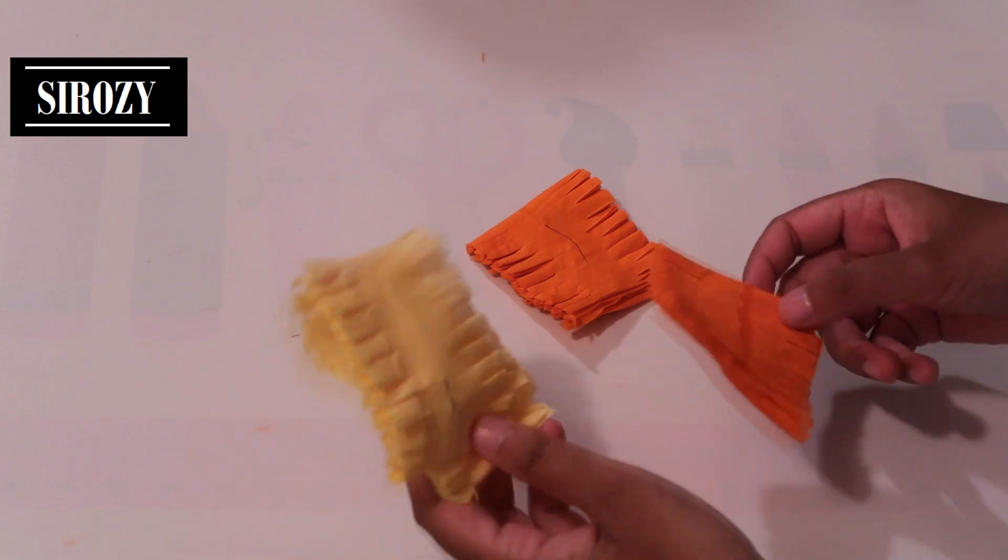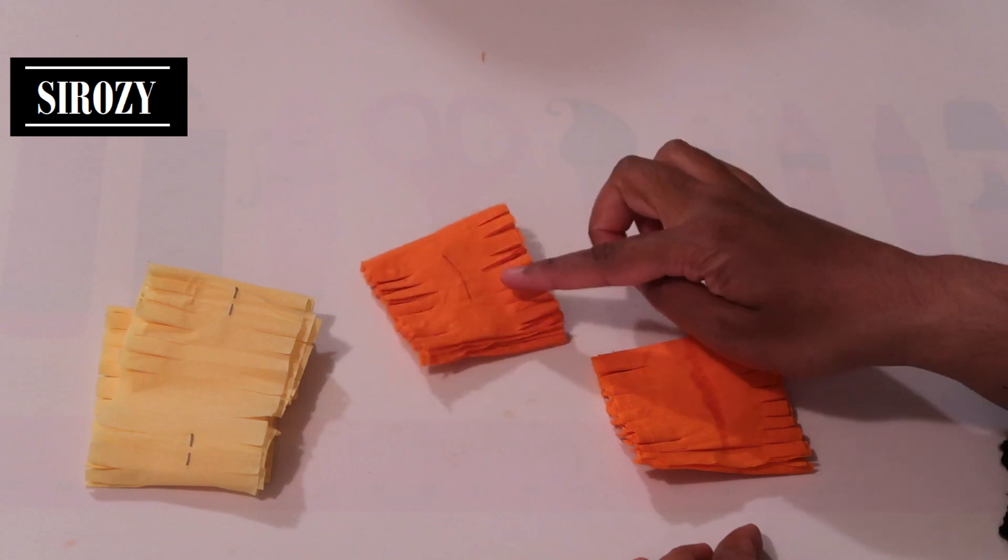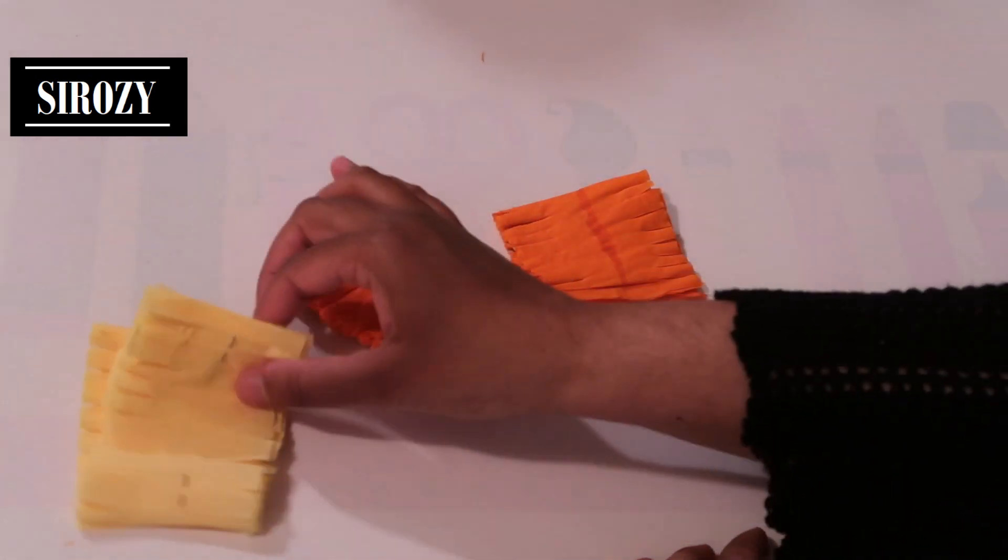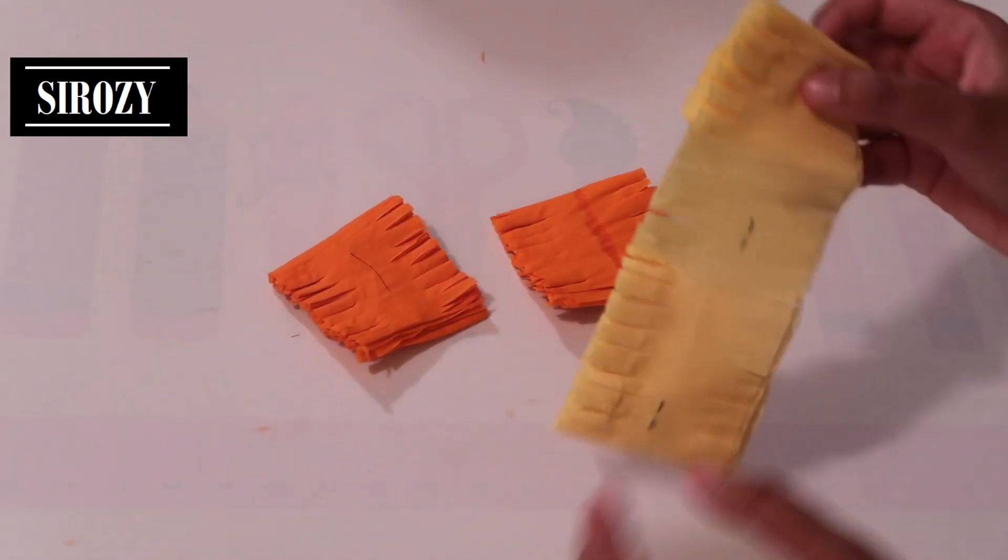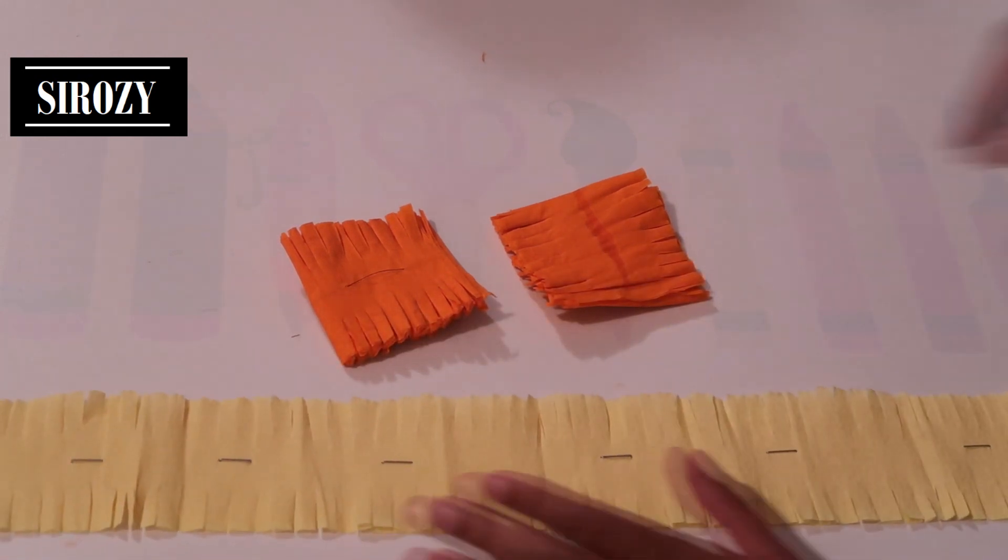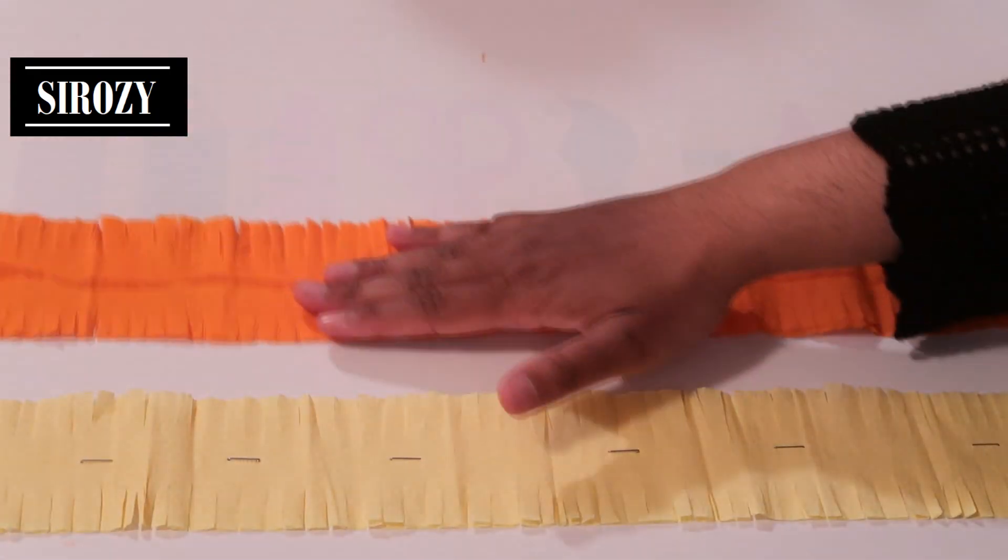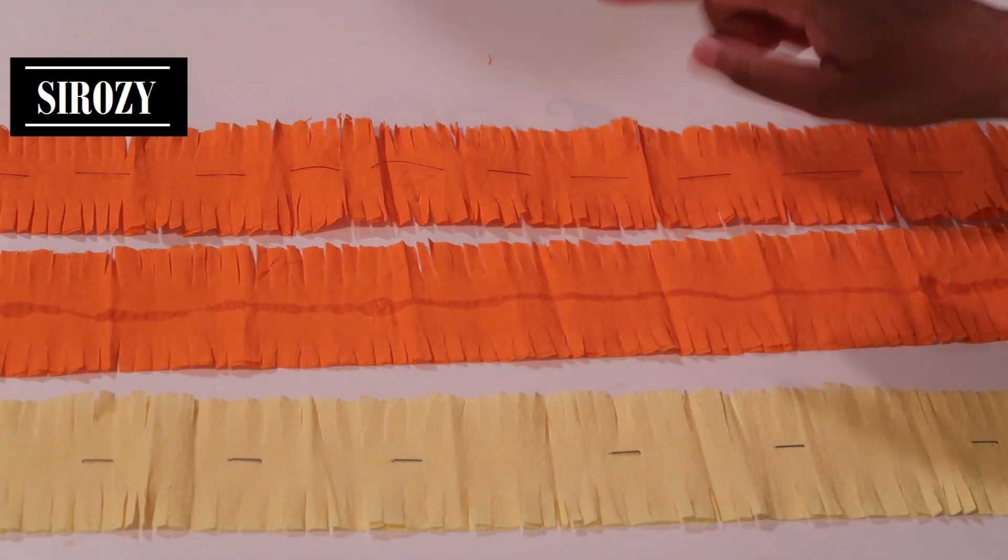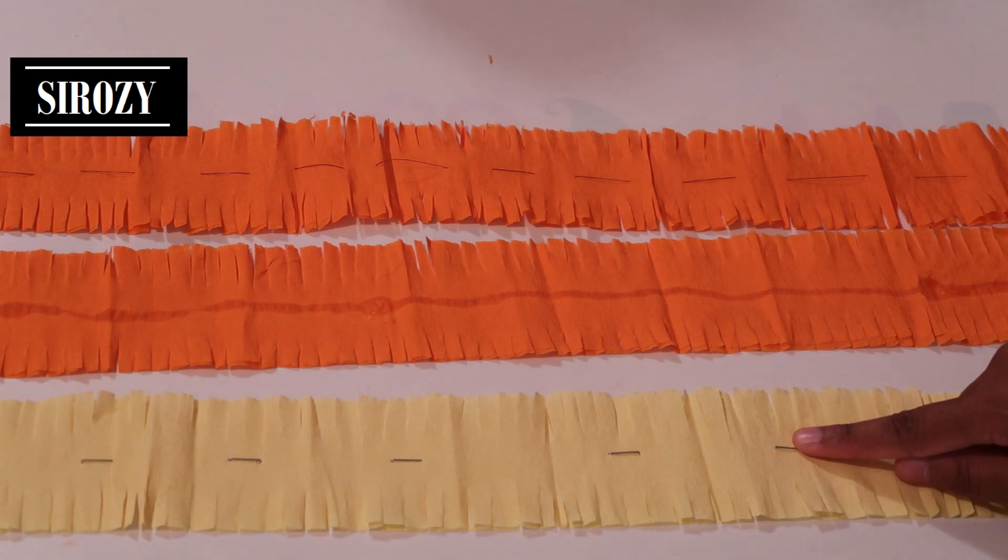So here I have the 3 garlands that I have made. This one is the one with the staples, this one is the one with the thread and this one is the one with the glue. Now I'll open them so we can compare and see the result. So these are the 3 garlands that I have made. This is the one with the thread, this is the one with the glue and this is the one with the staples.